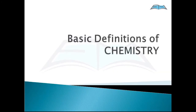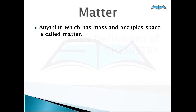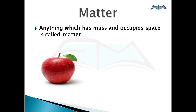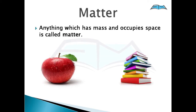Hello friends, today we will discuss the basic definitions of chemistry. Let's discuss first about matter. Can you tell me what matter is? Anything which has mass and occupies space is called matter. Can you name some examples of matter? For example, apple, books — anything around us is matter.